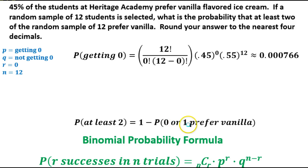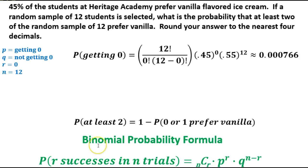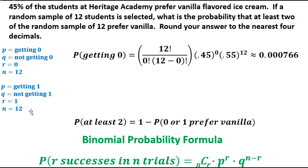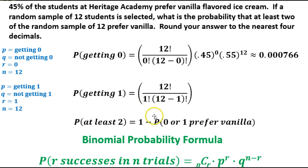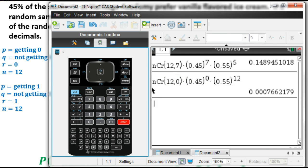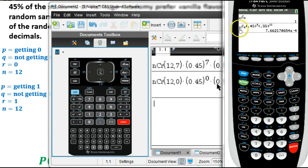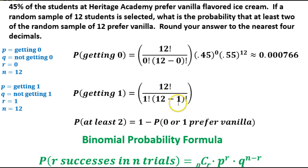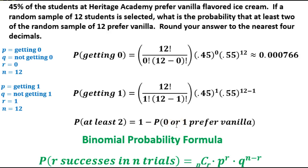Now we need to determine the probability that exactly 1 student prefers vanilla. The probability of success is still 0.45, failure is 0.55, r is now 1, and n is still 12. The combination becomes 12 choose 1. We raise 0.45 to the 1st power and 0.55 to the n minus r power, which is 12 minus 1 equals 11. Plug that into your calculator and you get the probability of exactly 1.